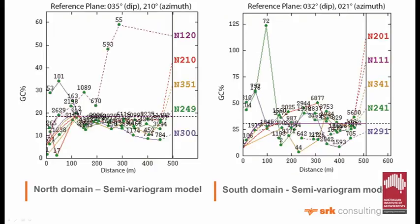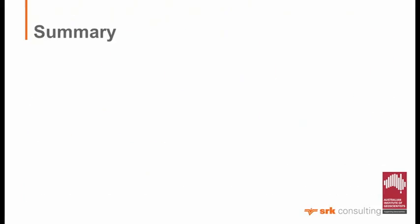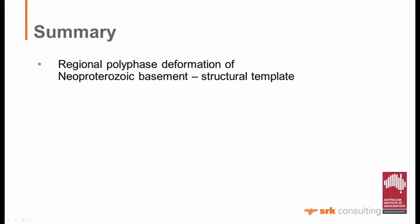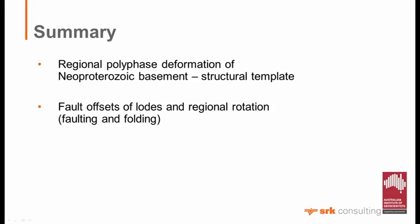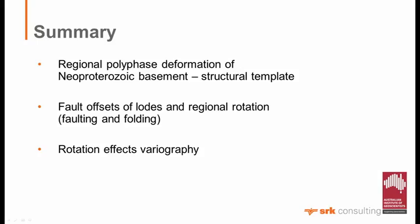I'll skip the variograms slide - it's just showing north and south variograms with slightly different directions of grade continuity for the mineralisation, which you need to account for in your estimation. In summary: regional polyphase deformation of Neoproterozoic basement on a pre-existing structural template; fault offsets the lodes with a regional rotation event; rotation affects the variography and needs to be taken into account in estimation; and large jumbo flakes are associated with faulting and pegmatitic intrusion.